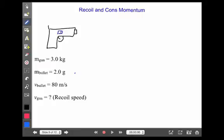Here I have a gun, and the mass of the gun is three kilograms, but it holds a two-gram bullet. We're going to need to convert that right away to 0.002 kilograms for the bullet. The gun is fired, and the bullet is going to leave the gun at 80 meters per second. What we're looking for is how fast does the gun kick back?